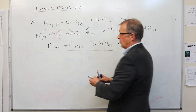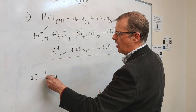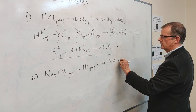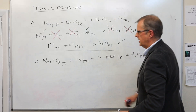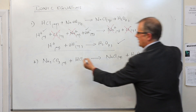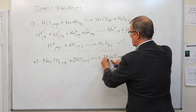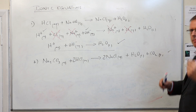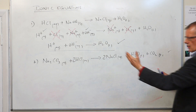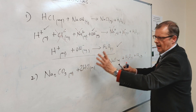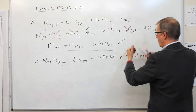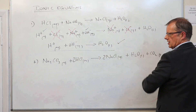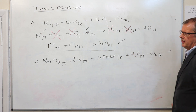Let me take another example. If I take sodium carbonate and react it with hydrochloric acid, it forms sodium chloride plus water plus carbon dioxide. The equation needs balancing: two hydrogens there means I need a two in front of HCl; I need two sodiums, so a two there; two chlorines on each side. That equation is now a balanced conventional equation. As a reminder: an acid plus a metal carbonate gives you a salt, water, and CO₂.